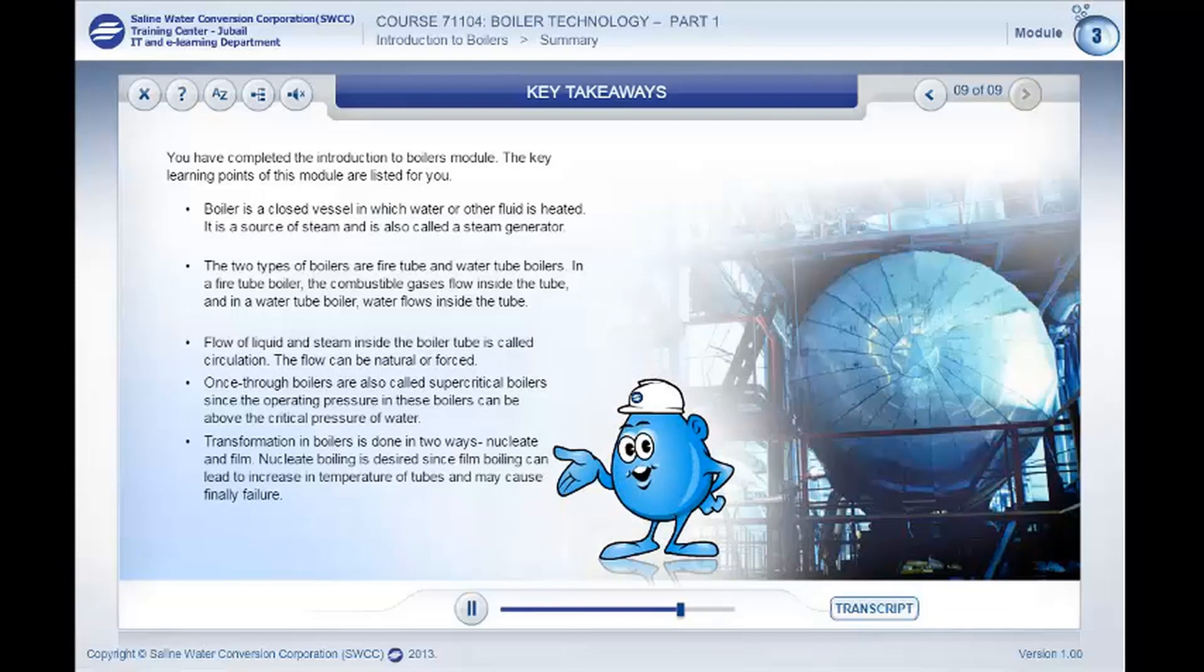Transformation in boilers is done in two ways, namely, nucleate and film transformation. Nucleate boiling is desired since film boiling can lead to increase in temperature of tubes and may cause failure.